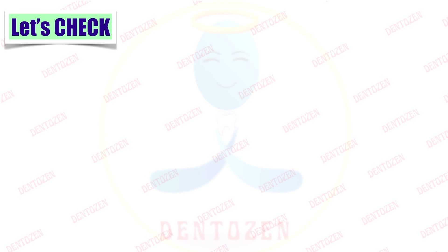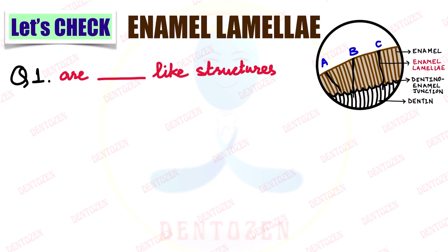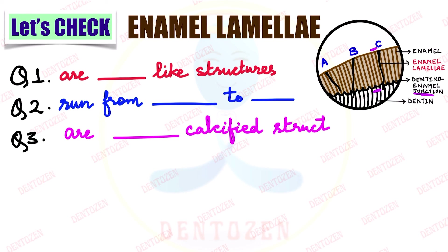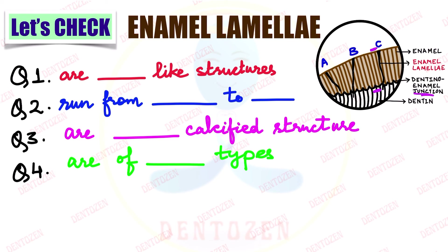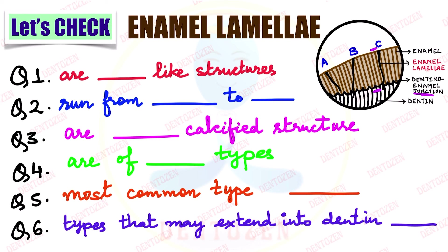Let's check what you have learned. Question one: enamel lamellae are what-like structures — what do they resemble? Question two: enamel lamellae run from where to where — origin and destination? Question three: are they hyper-calcified or hypo-calcified structures? Question four: how many types of enamel lamellae are there? Question five: which type is the most common? Question six: which types may extend into dentine — you can get a hint from the diagram.